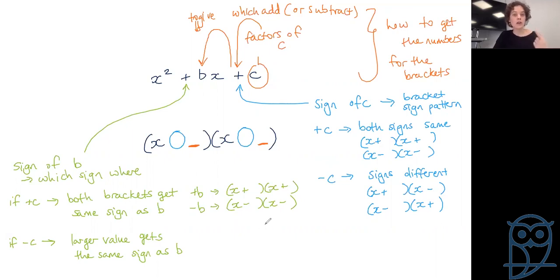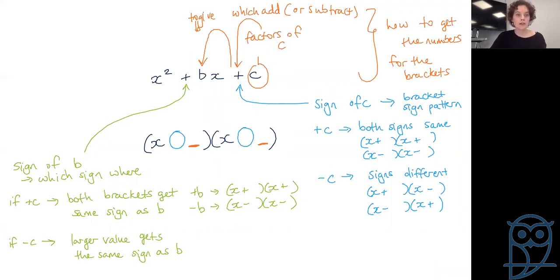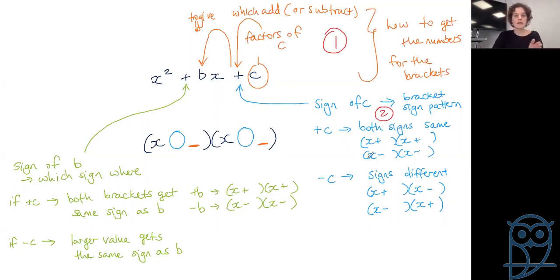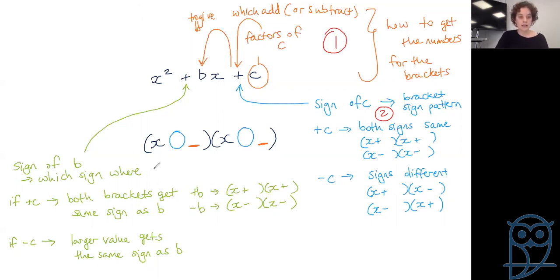So to summarise: when the coefficient of x squared equals one, we use our factor sentence to get the numbers for our brackets — factors of c which add or subtract to give b, depending on the sign. That's step one: what numbers are involved? Step two: what sign pattern — plus c means same signs, minus c means different signs. Then which sign goes where, based on the sign of b.